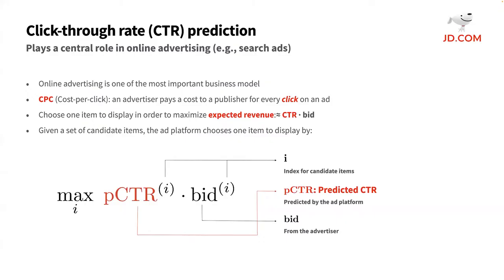Online advertising such as Search Ads and Display Ads is one of the most important business models for search engines, e-commerce platforms, social networks, and so on. Cost per click is a widely used online advertising mechanism in which advertisers pay for each user's click on their sponsoring items. With this mechanism, it is necessary for the advertising platform to estimate the click-through rate, known as CTR, for each candidate item and then select one item to display in order to maximize the expected revenue.